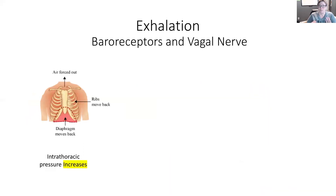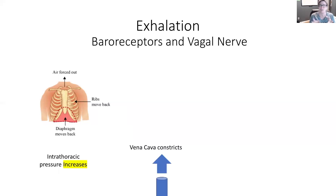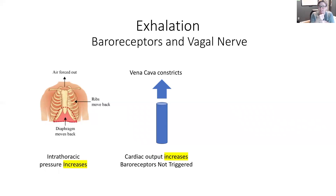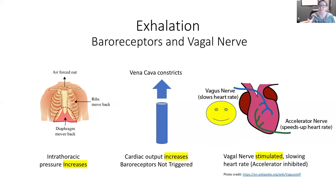On exhalation, the diaphragm pushes up, the ribs come together, and we're really increasing the amount of pressure inside the chest cavity — intrathoracic pressure increases. As a result, the vena cava will constrict and get smaller, increasing the amount of blood coming back to the heart at a more rapid rate. The baroreceptor will not be triggered because it's getting enough blood, which allows the vagus nerve to be stimulated, meaning the heart rate will slow down and pump fewer times.